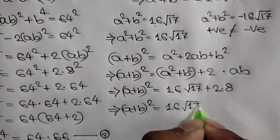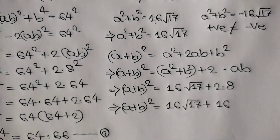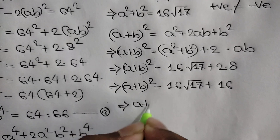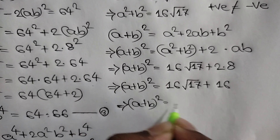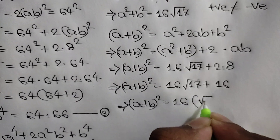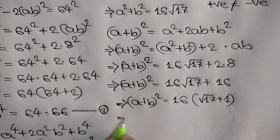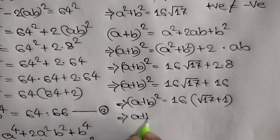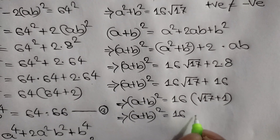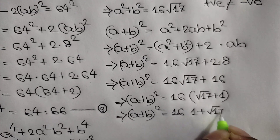So a plus b whole squared is equal to 16 times square root of 17 plus 1. Taking common factor 16, we get a plus b whole squared is equal to 16 times the quantity square root of 17 plus 1.